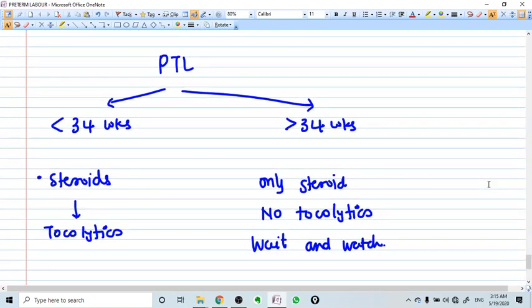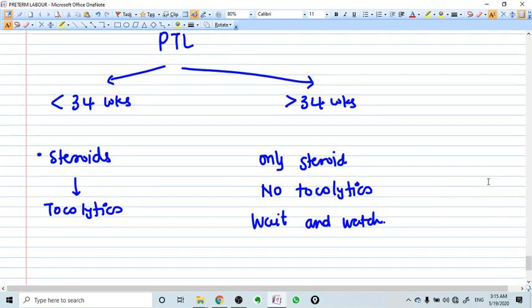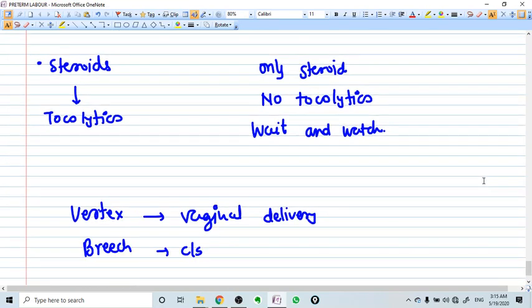If the preterm labor is less than 34 weeks, we start steroids along with tocolytics. Tocolytics should be used for short term, you cannot use tocolytics for more than two or three days. You need to achieve lung maturity. Till then, you can give tocolytics. But if it is more than 34 weeks, then you don't give tocolytics. Only steroid one dose is necessary. Then wait and watch for the delivery.